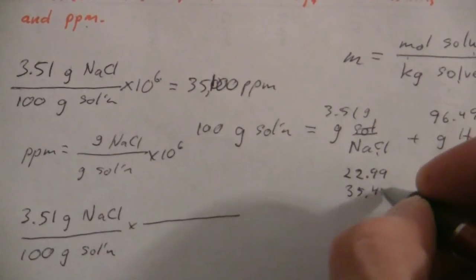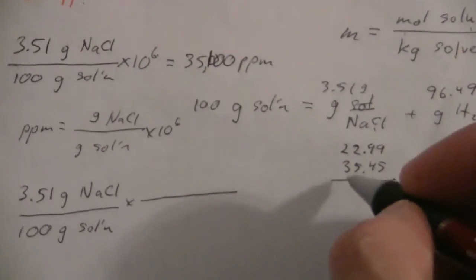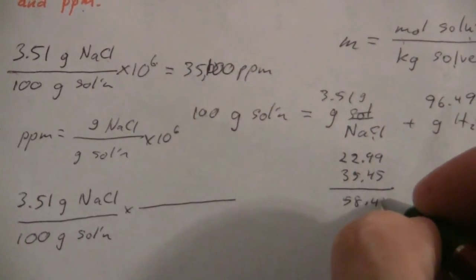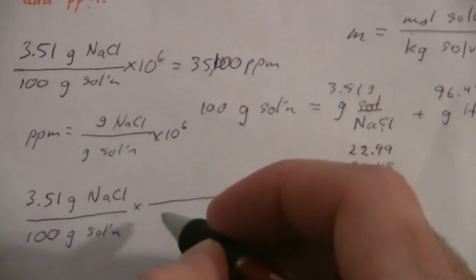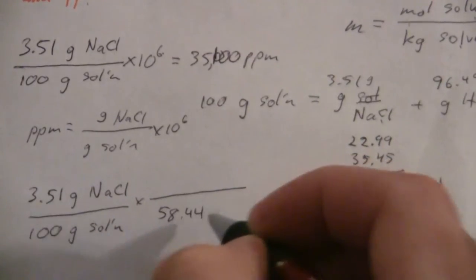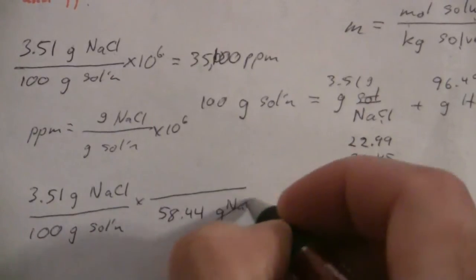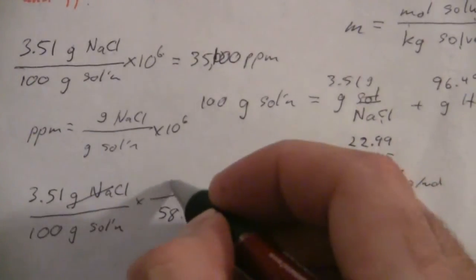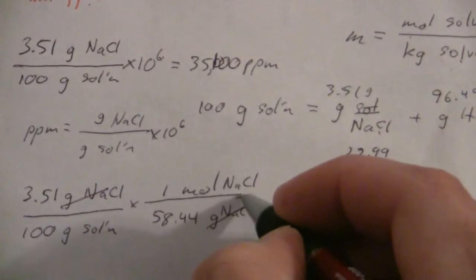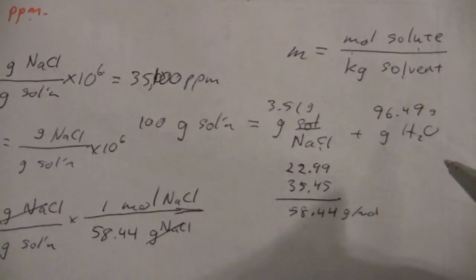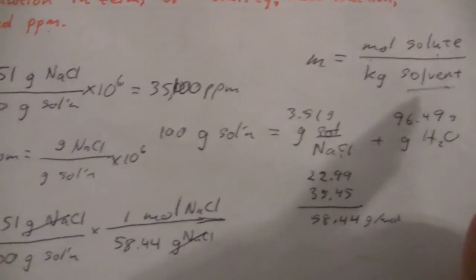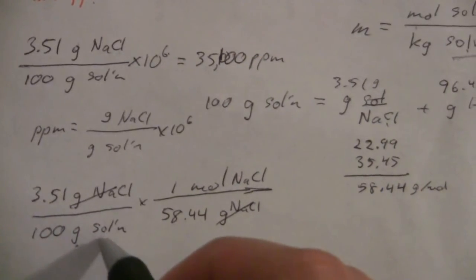So we add those together, and it looks like we have about 58.44 grams per mole. So 58.44 on the bottom, so that our grams of NaCl will cancel. And now we have moles of NaCl on the top, and that is what we're looking for. So now we need kilograms of the water. We have grams of the solution.